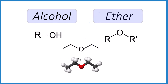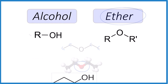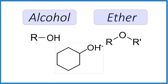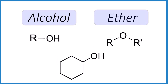One more. We have our skeletal formula and our molecular model. Is this an alcohol or an ether? We have carbons here, single bonded to oxygen on both sides — you can see it here — and the oxygen is single bonded to carbons. That's an ether.